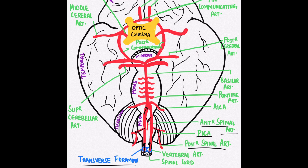As both vertebral arteries exit the medulla oblongata and enter the pons, they fuse together to form the basilar artery. Just after this fusion, the anterior inferior cerebellar artery arises, which supplies the anterior portion of the cerebellum.